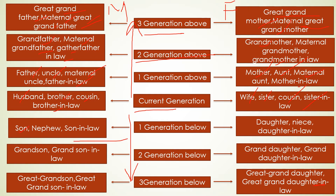Moving to the first child generation below us: son, nephew, and son-in-law on the male side; daughter, niece, and daughter-in-law on the female side. The second child generation includes: great-grandson, grandson, and grandson-in-law on the male side; and great-granddaughter, granddaughter, and granddaughter-in-law on the female side.